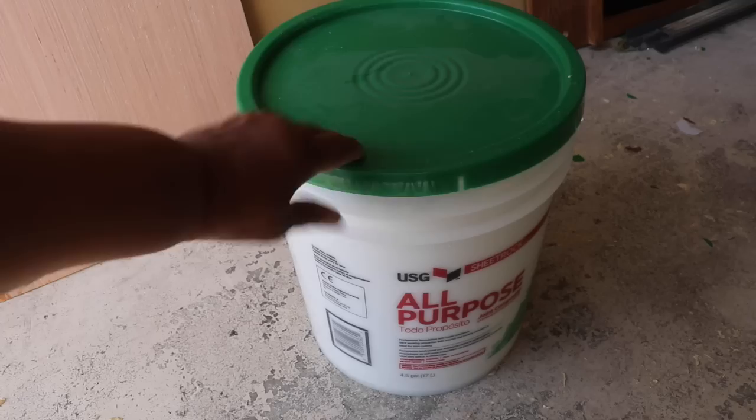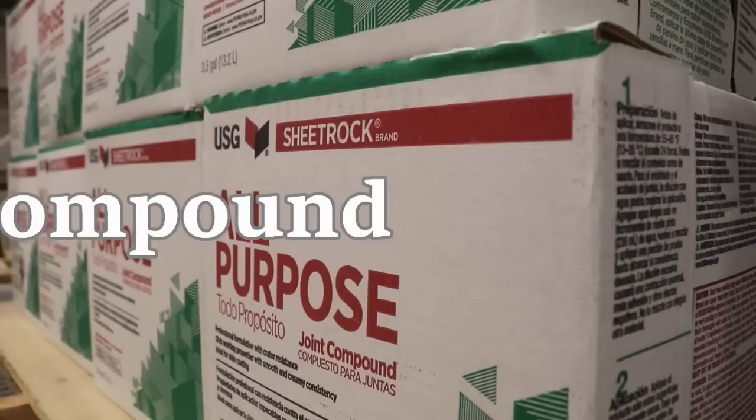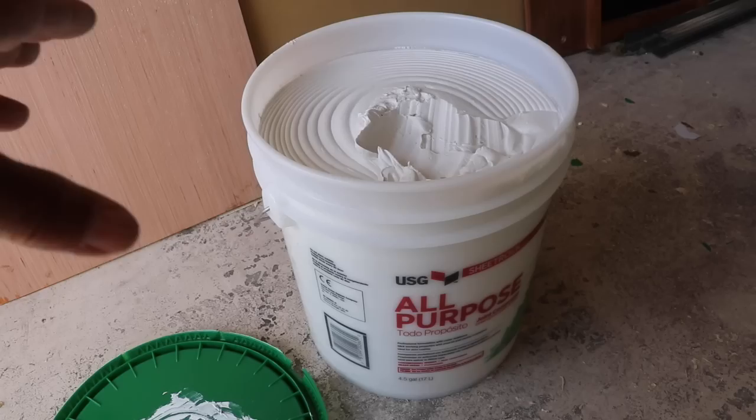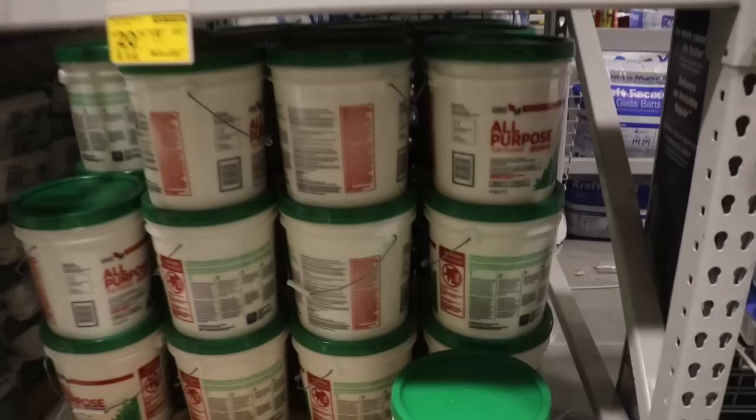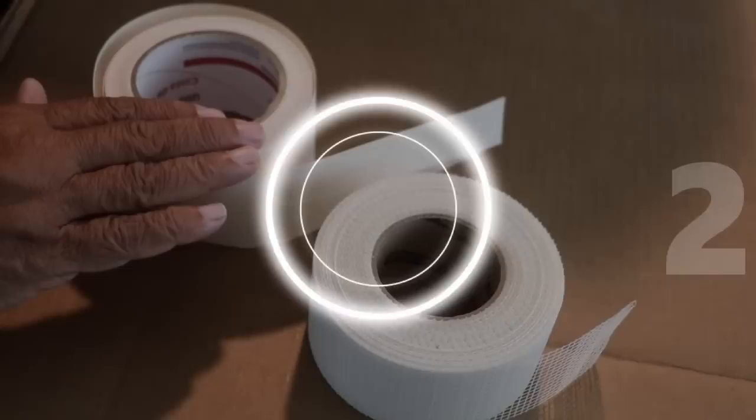You're going to want to start off with all-purpose joint compound. It comes in a five gallon pail or a box. Maybe you're wondering what's the difference between the joint compound you purchase in the box or the joint compound you purchase in the five gallon pails. The only difference is you're paying for the pail. Boxes tend to be purchased by contractors because we have plenty of these. You don't need a pail, why pay for it?